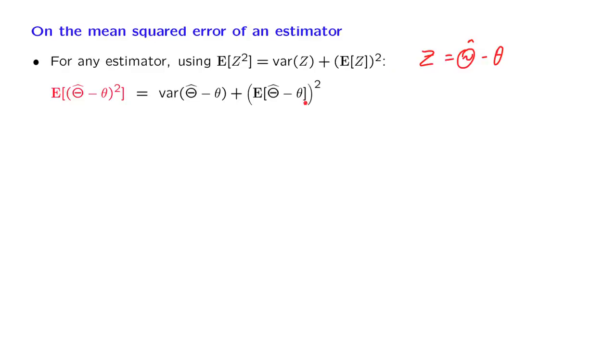The expected value of our random variable Z squared is equal to the variance of that random variable plus the square of its mean.